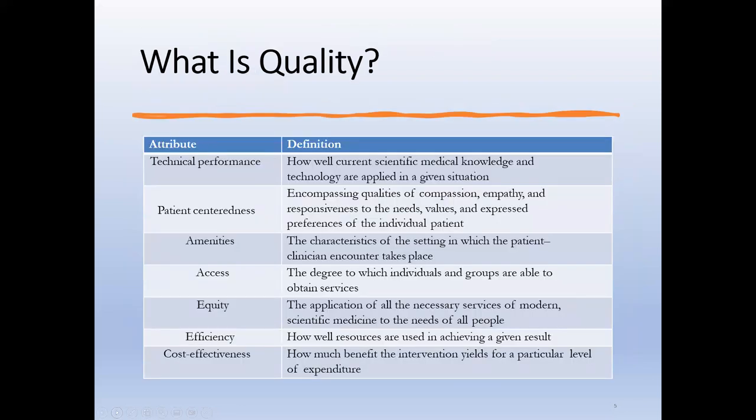If you get the experts in a room and ask them about the attributes of quality, they agree on several characteristics. Technical performance: was the correct procedure performed correctly at the right time on the right site? Patient-centeredness: encompassing qualities of compassion, empathy, responsiveness to needs, values, and expressed preferences of the individual patient. This isn't limitless — today many institutions are short-staffed in nurses and respiratory therapists, so patient-centeredness can get pushed aside.